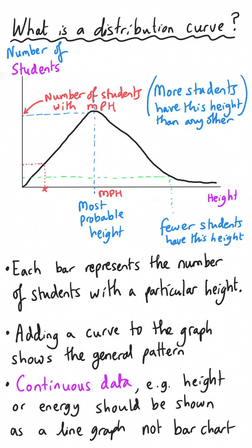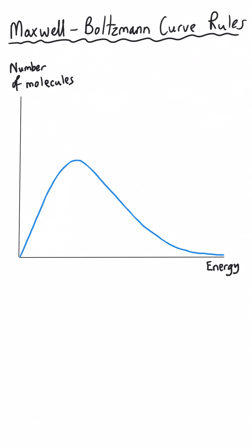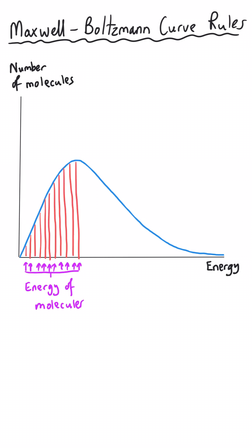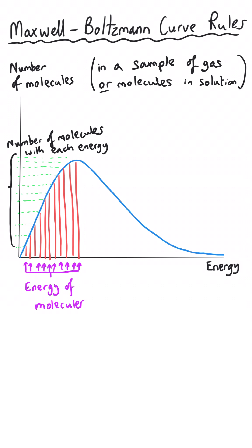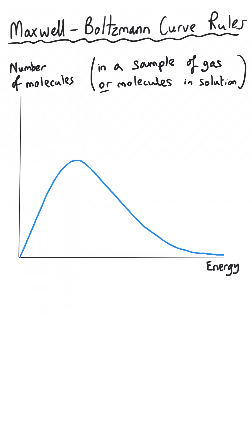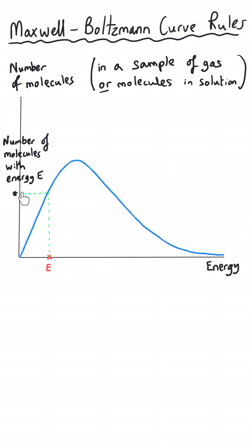Maxwell-Boltzmann curves are quite similar to this, only instead of looking at students we're looking at molecules, and instead of heights we're looking at energy. A Maxwell-Boltzmann curve will typically look something like this. What you have to imagine is that a graph has been plotted with the number of molecules in a particular sample — typically gases — that have got a particular amount of energy. If we pick a random amount of energy, we read up to the line and construct a line across, and this gives the number of molecules with that particular amount of energy.